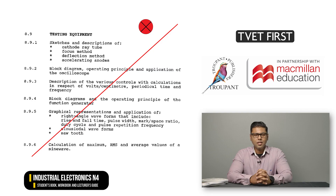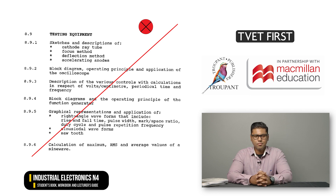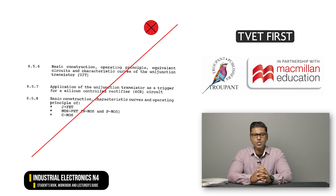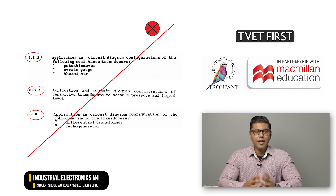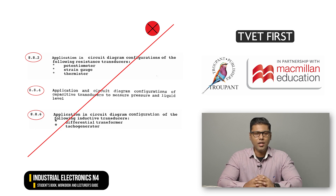What are the most notable changes in the new curriculum? The entire syllabus for Industrial Electronics N4 has been reworked and updated. The most notable change is the removal of the former Section 8.9 on testing equipment with its six learning outcomes. All the content about unijunction transistors, or UJTs, as well as JFETs, MOSFETs and CMOS transistors has been removed from the new curriculum. And lastly, applications in circuit diagram configurations are no longer required for resistive, capacitive and inductive transducers and have also been removed.